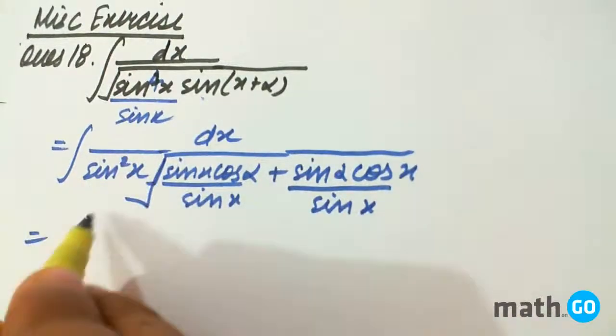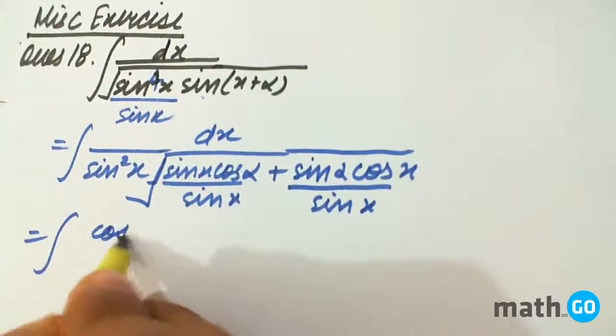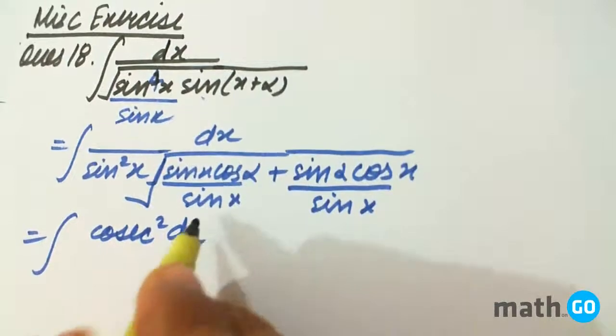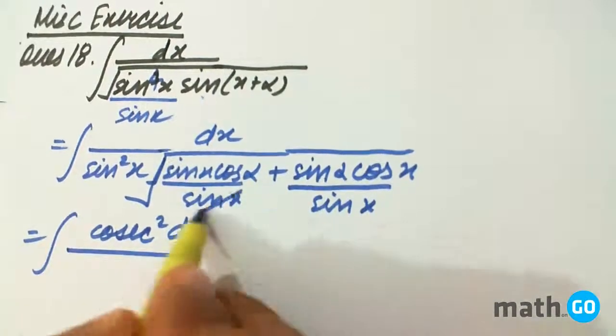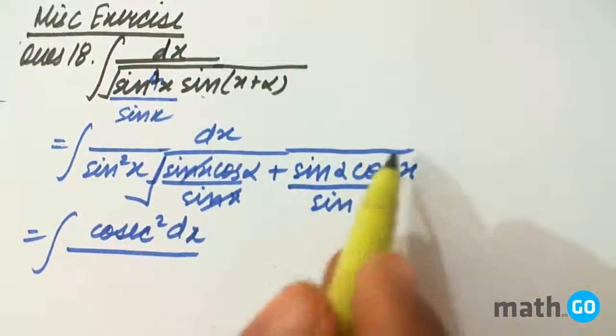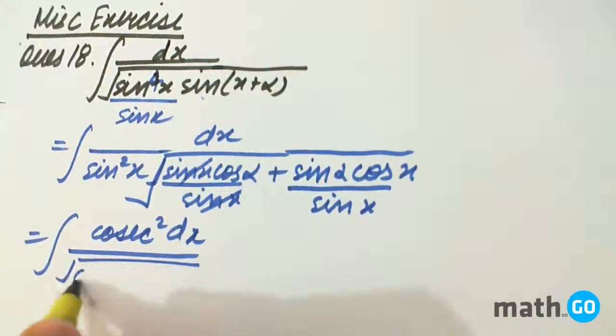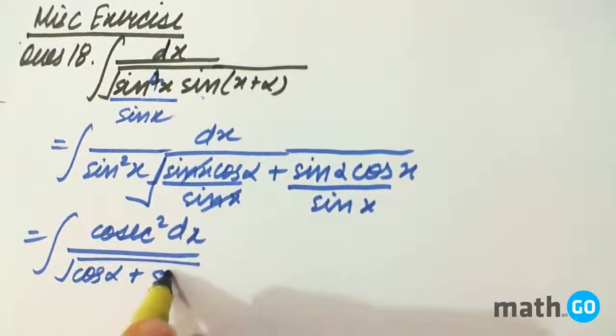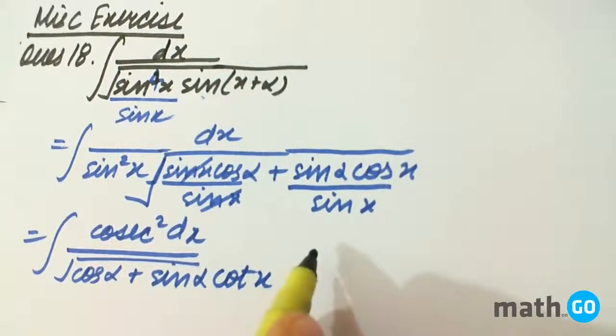If we take this above we will be left with cos x square dx upon this gets cancelled. This becomes cot x. So cos alpha plus sin alpha into cot of x.